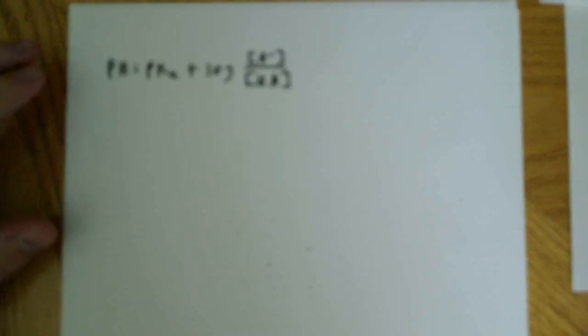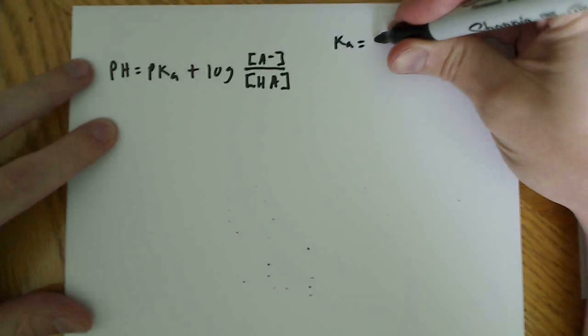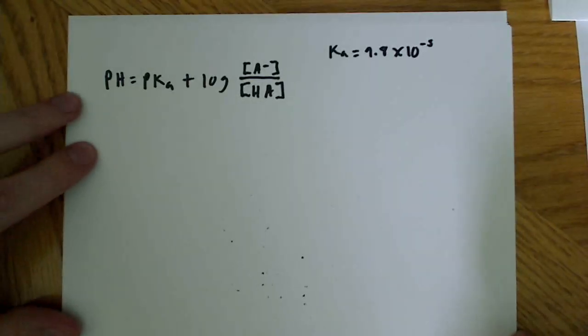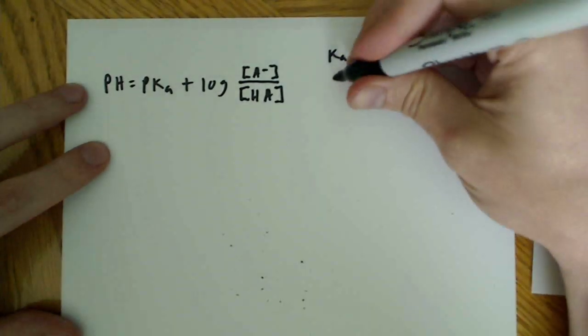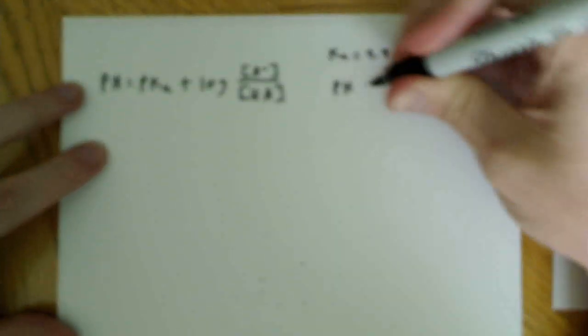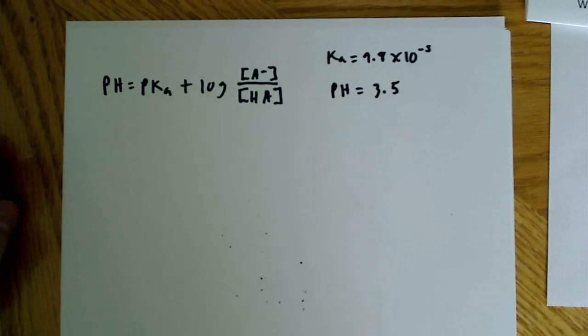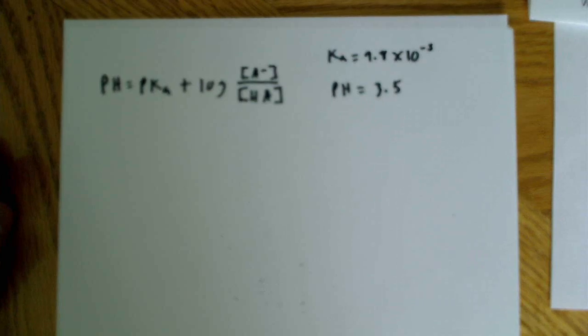Now, we also know that the Ka is equal to 9.8 times 10 to the negative fifth. And we also know that this is happening at a pH equal to 3.5. So, that's pretty much the information we have right now.